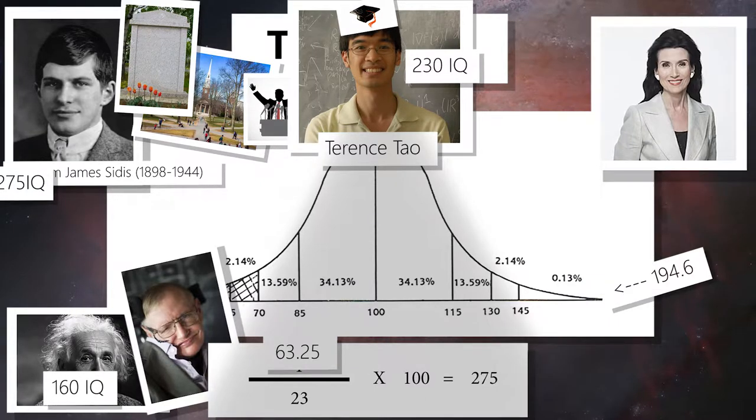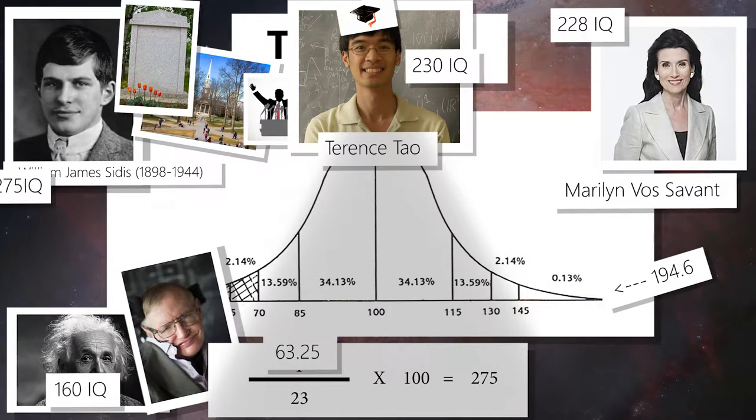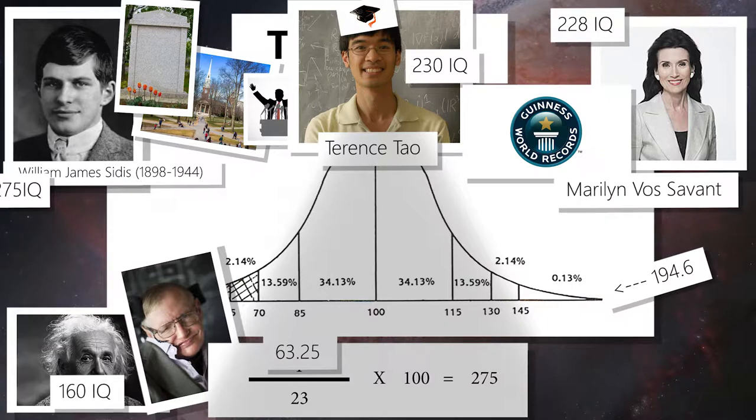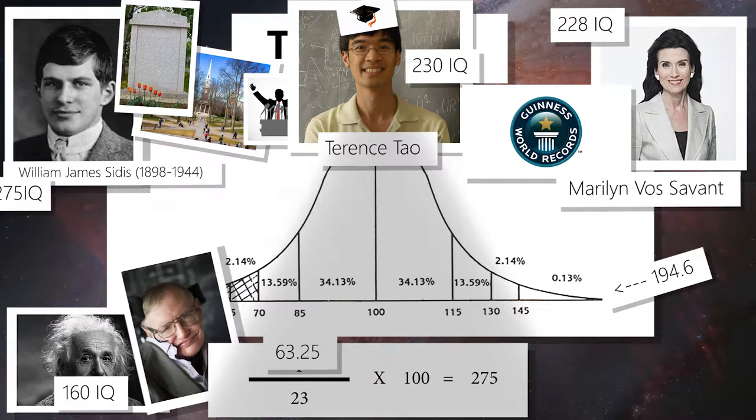Marilyn Vos Savant is the third placeholder, clocking in at an IQ of 228. She won the Guinness World Record in 1986 for the person with the highest consistent IQ. She currently owns a magazine column in which she answers people with their life drama. Link to said column in the description if you're interested.